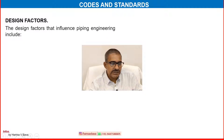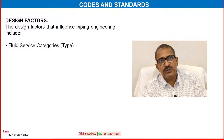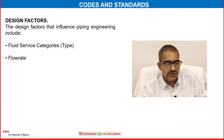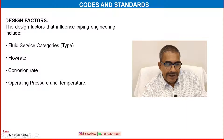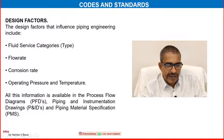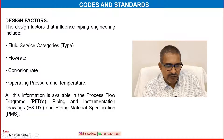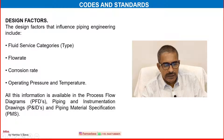The design factors that influence piping engineering include fluid service category — what type of fluid is being used inside the pipe — flow rate, whether it is in a laminar, turbulent or transition region, and corrosion rate, which is very important. Operating pressure and temperature are also always important. All this information is available in the process flow diagram, piping and instrumentation diagram, and piping material specification. We have posted a video specifically on PFD and P&ID, so please review that one.